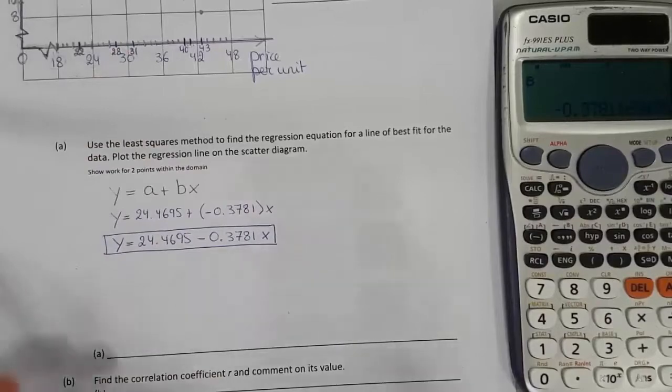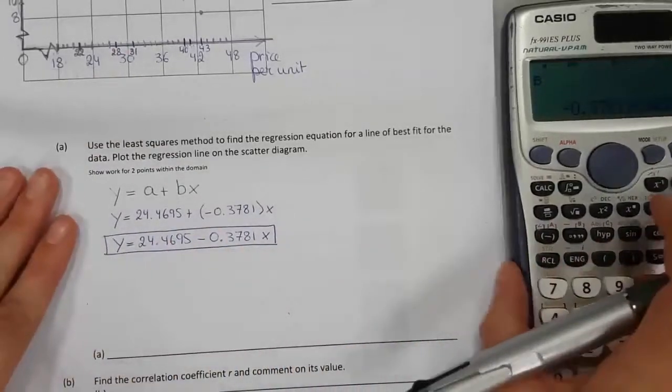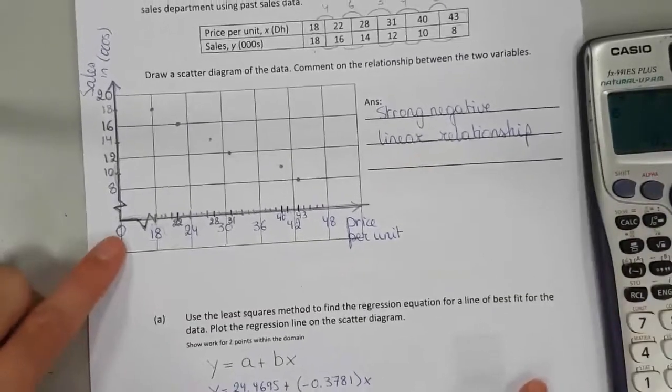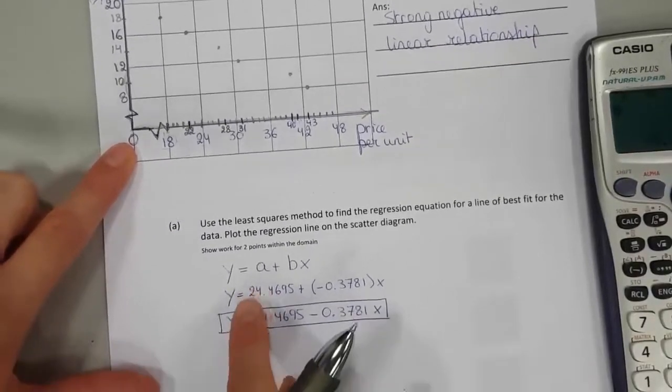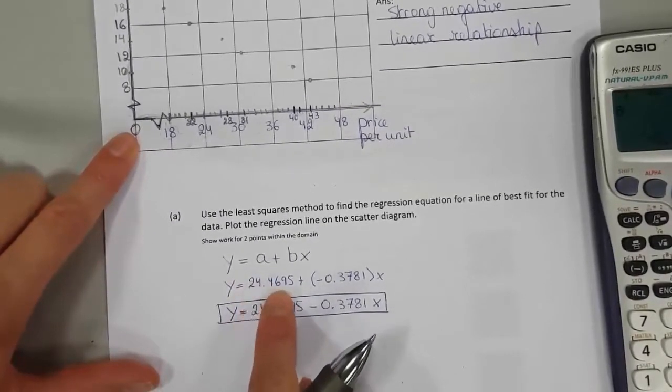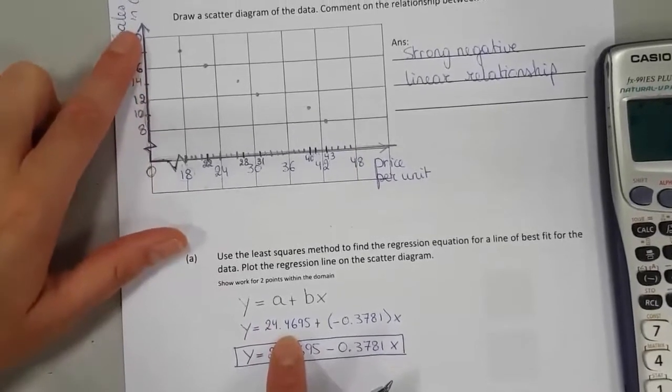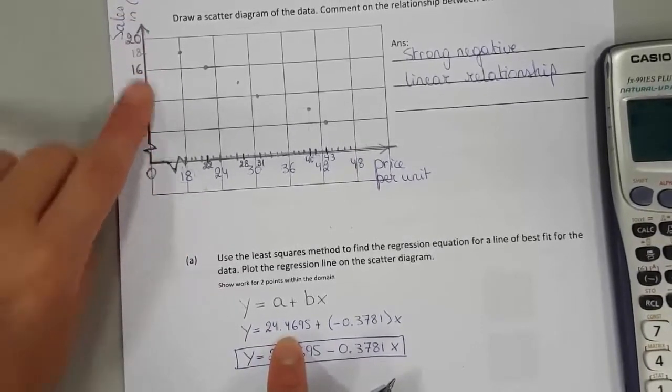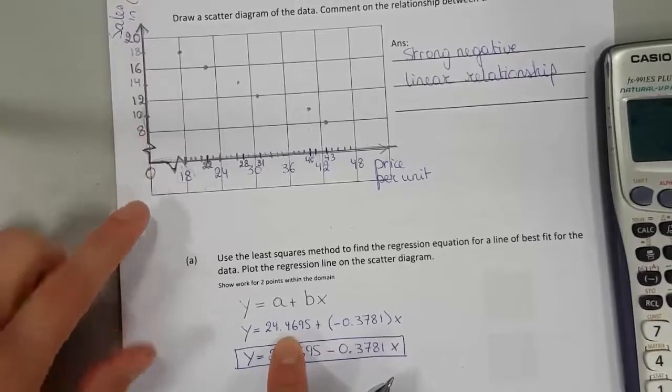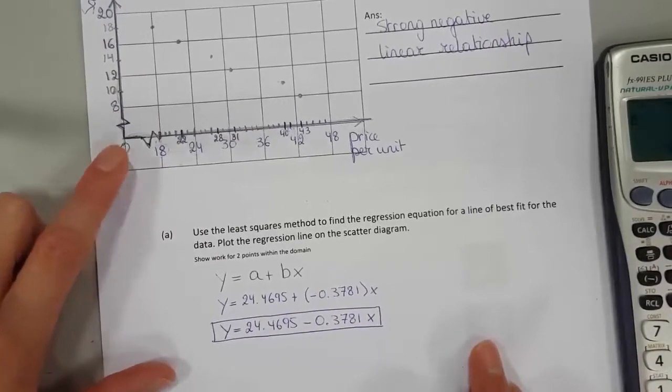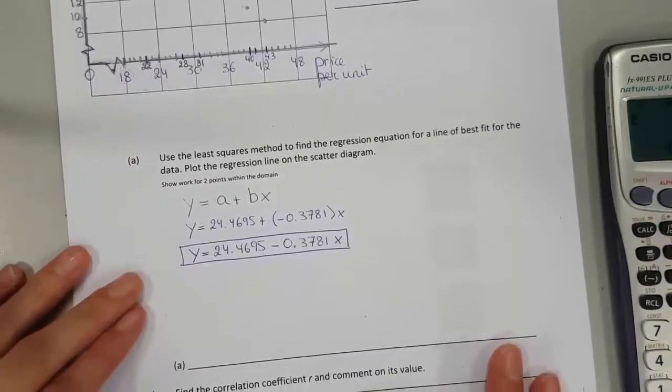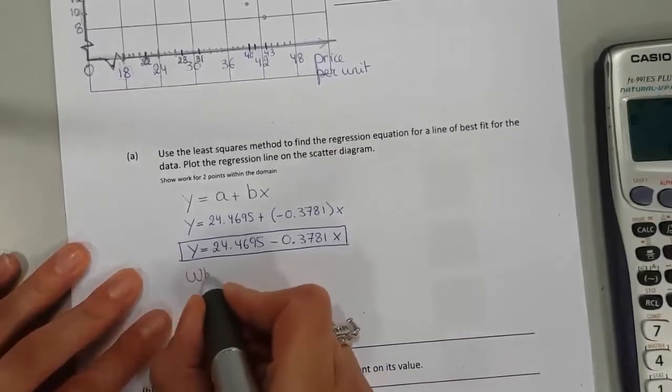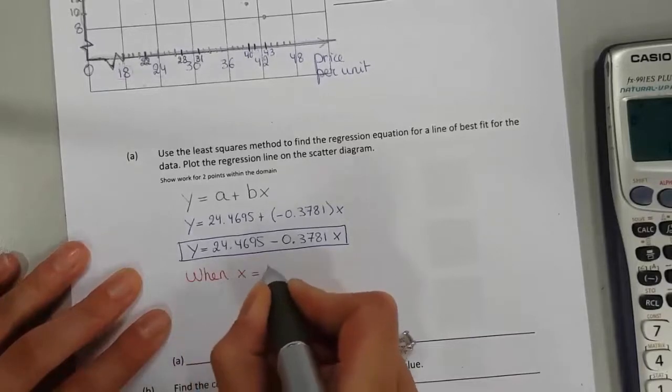Now they want us to plot the regression line on the scatter diagram. So that means we need two points. I cannot use 0. If I plug in 0, my answer will be 24.5. 24.5 does not fit on my diagram. So I need to use another number. How about we just use 18?